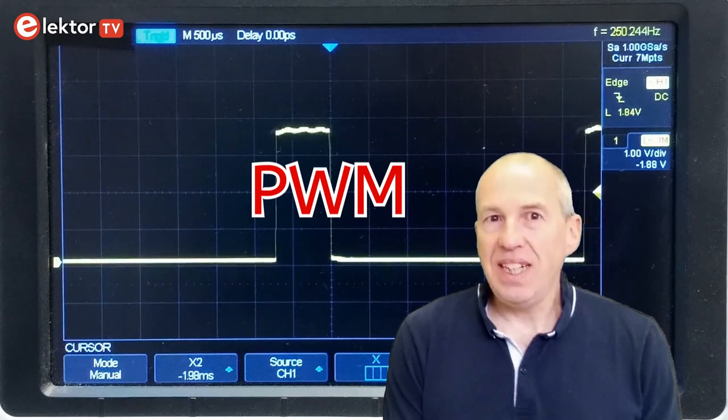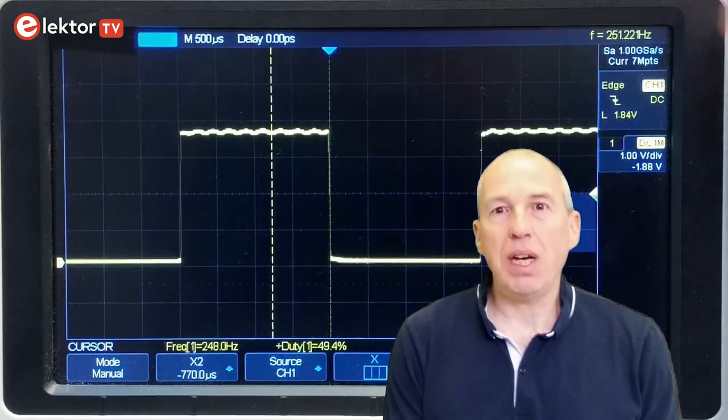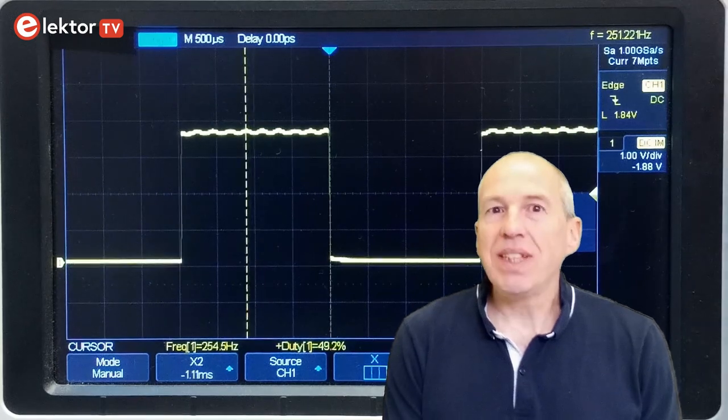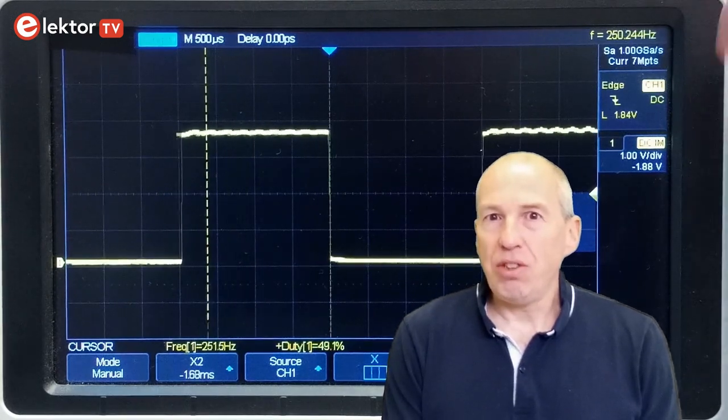Actually, in this case it is not correct to talk about a square wave, as a square wave has a fixed pulse width which cannot be modified. We should say rectangle wave instead.